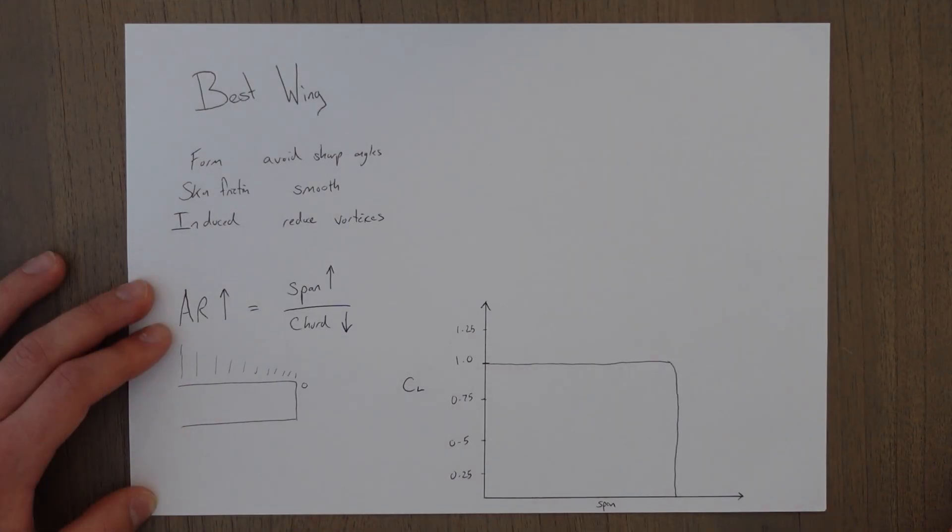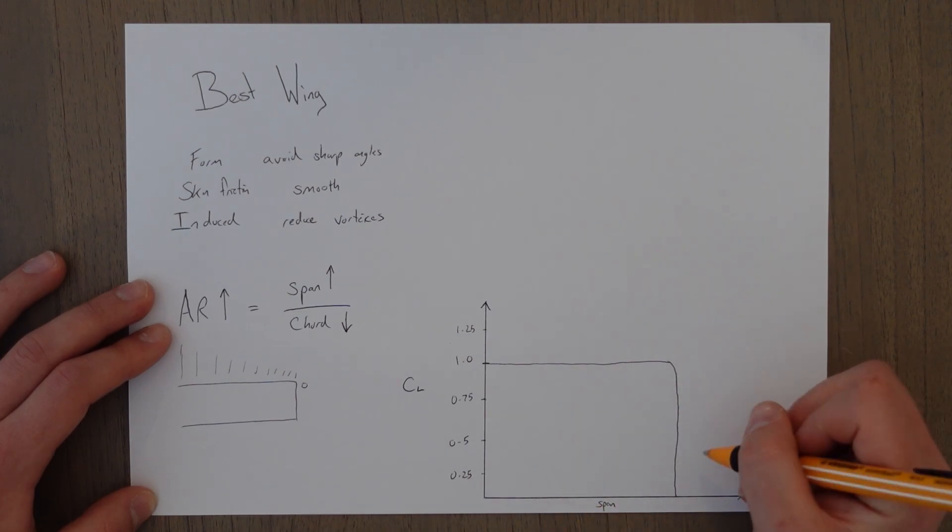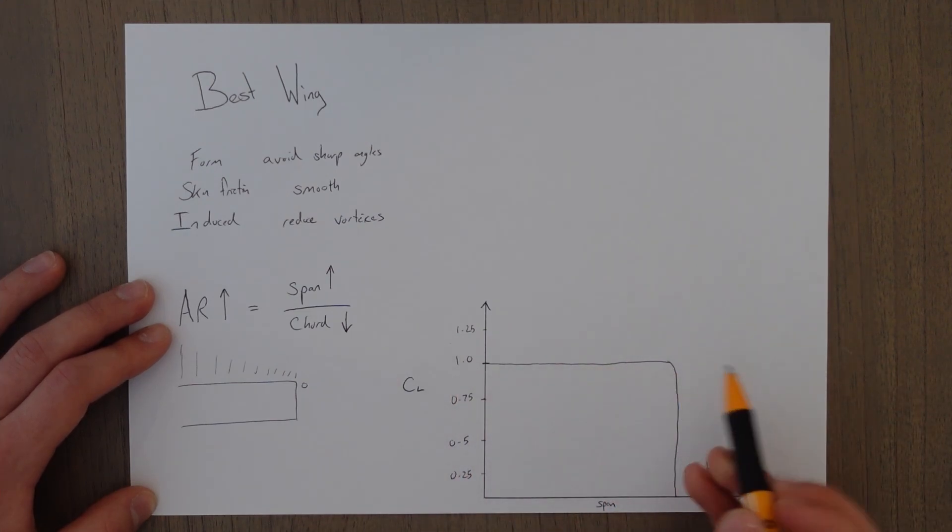So our common wing designs will give us lift distribution patterns like this. So this is the elliptical wing. Produces fairly consistent until reaching the end where it drops off. This is the most efficient wing design. But it comes with the challenges of being very hard to engineer and expensive.